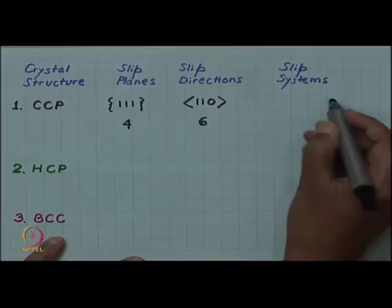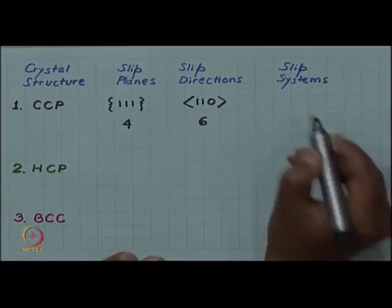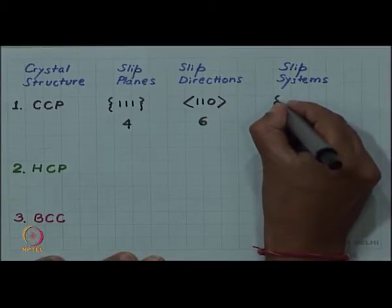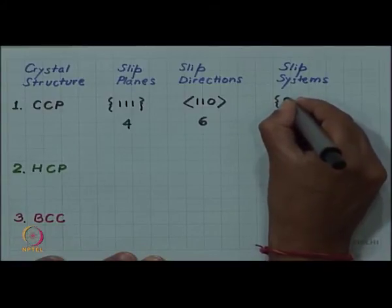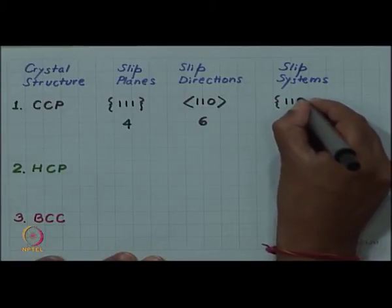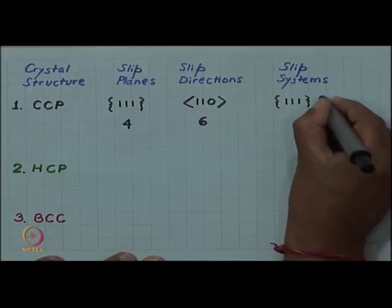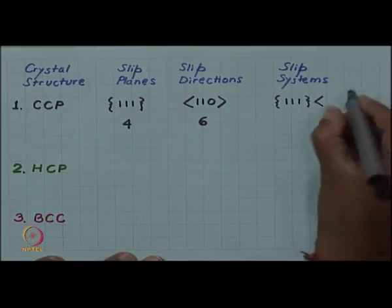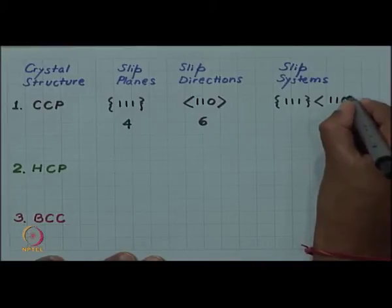The total number of slip systems. And the way to write slip systems and the way to write the slip system is to write the plane and direction next to each other. So we will write {111}<110>.